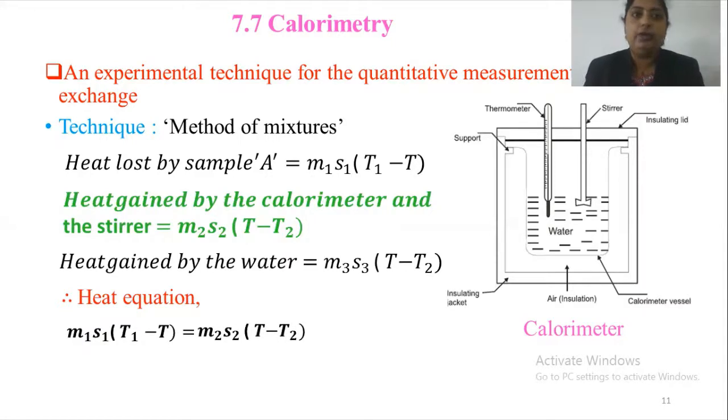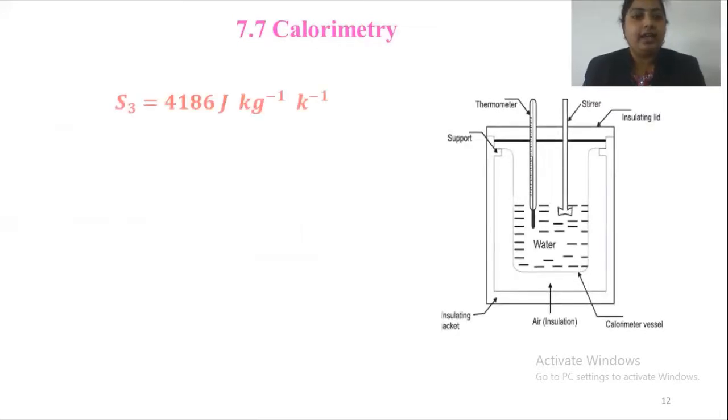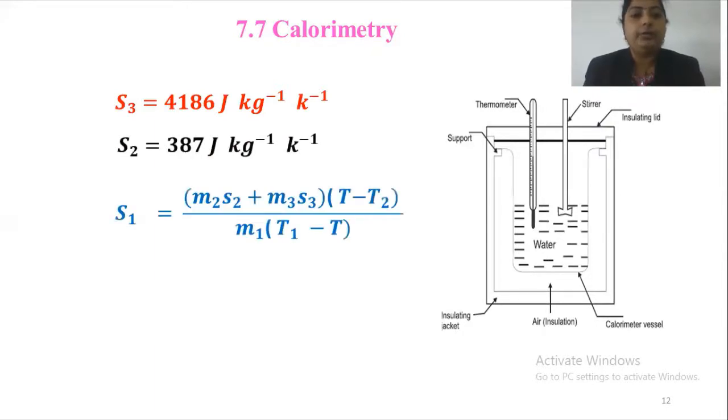Knowing the specific heat capacity of water S3 equals 4186 joule per kg per Kelvin and copper S2 equals 387 joule per kg per Kelvin being the material of the calorimeter and stirrer, one can calculate the specific heat capacity S1 of sample A. S1 equals M2 S2 plus M3 S3 into T minus T2 upon M1 into T1 minus T.